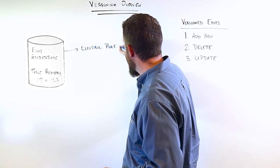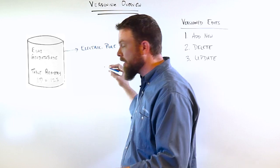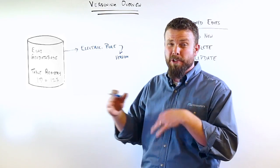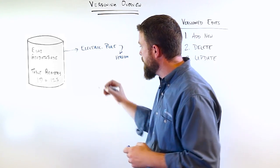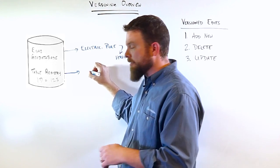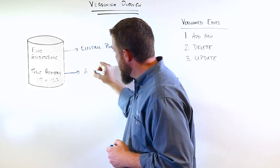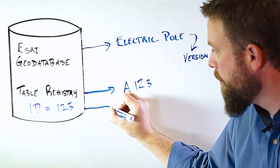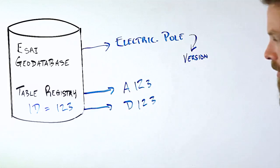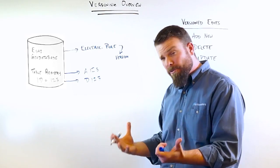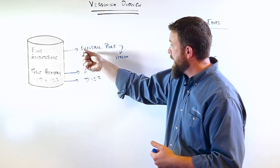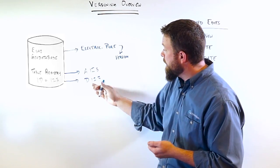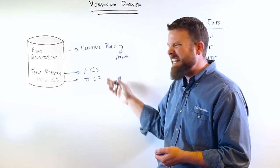The next piece we want to talk about is as we register this as versioned, and that's an ArcCatalog operation. When we do that, it creates two additional tables as well as some other sequences, but the two tables I really want to call out to you are first, it creates A and uses that same ID here, 123, for an add table, A123. The second important table that it creates is called D123. The D is for delete. So, we now, when we talk about the table, really have three separate tables that we're utilizing in the concept of versioning. The base table, you hear us call that the base table, is the electric dot pole. We have electric dot A123, which is our add table, and the D123, which is our delete table. So, we call these the add and delete tables for short.